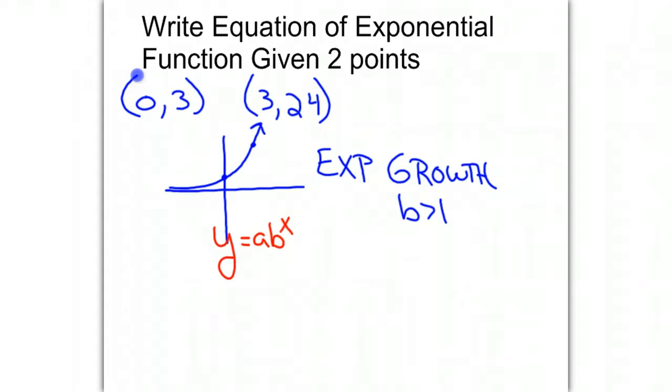If we take the point (0,3), that would give us 3 equals a times b to the 0 power. And the point (3,24) would give us the equation 24 equals a times b cubed.